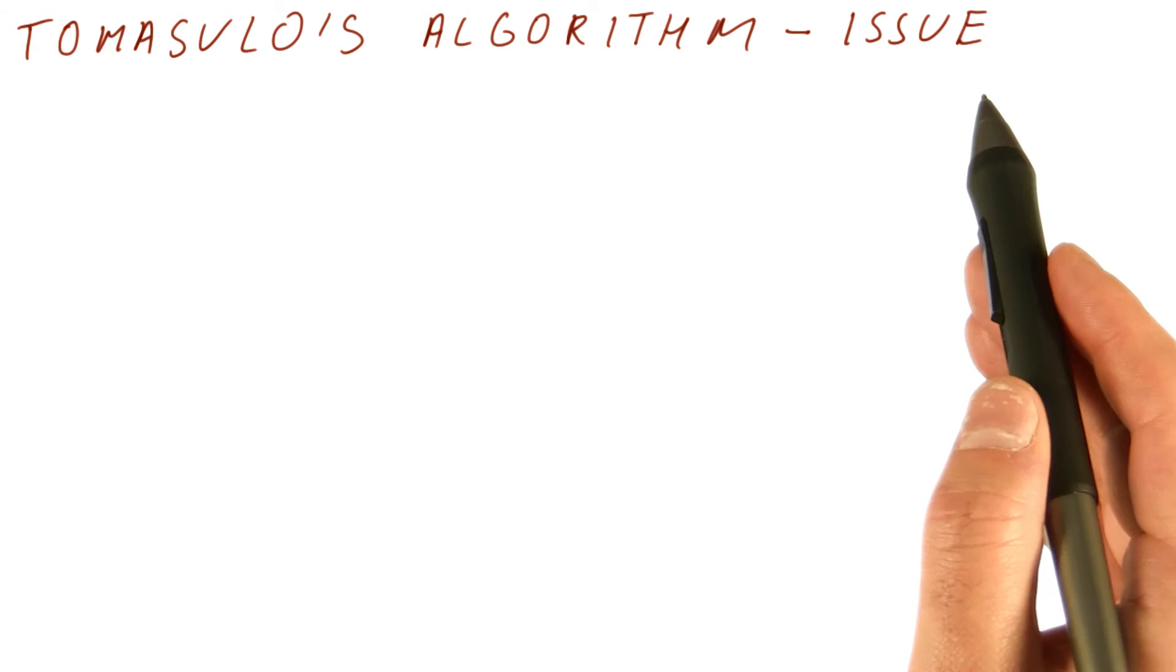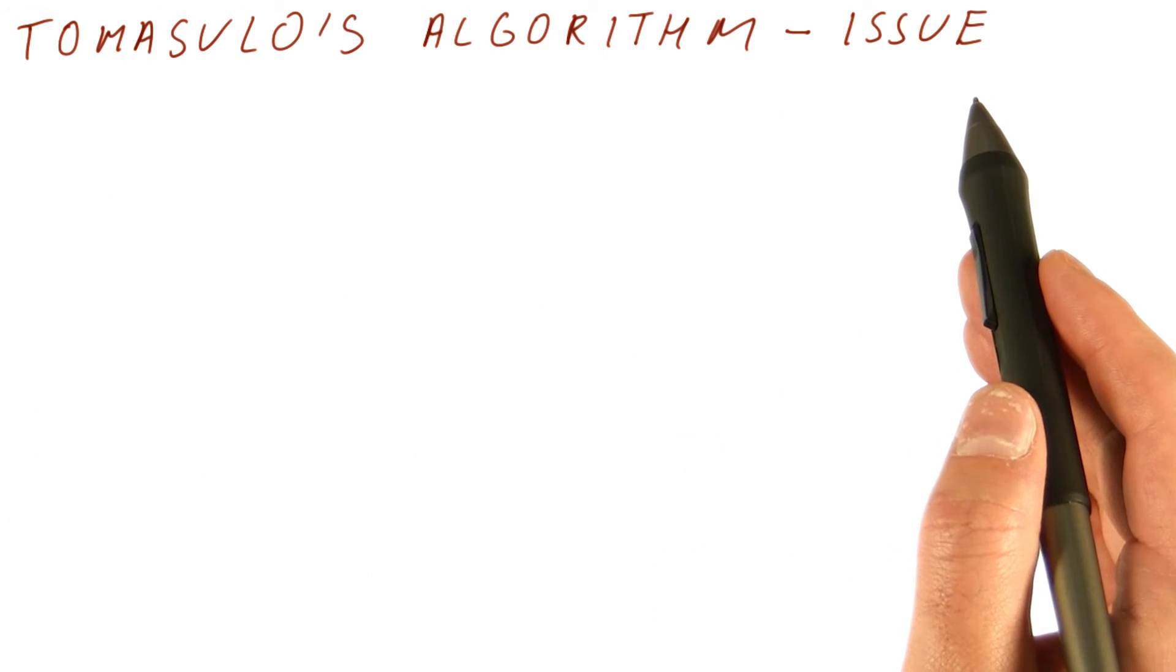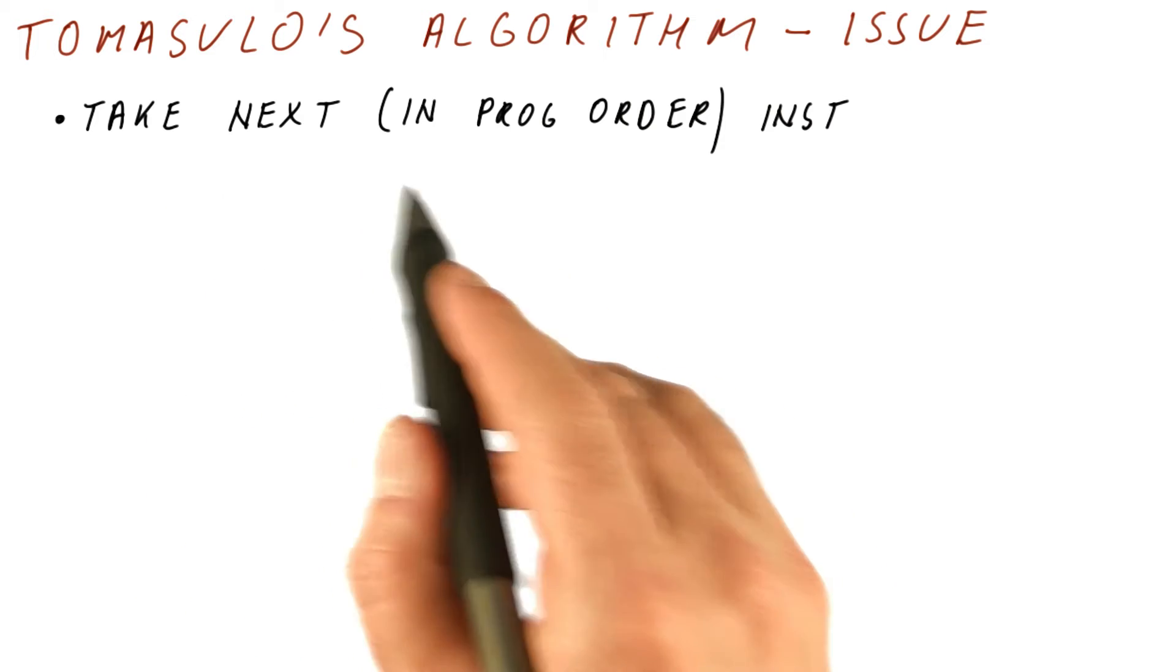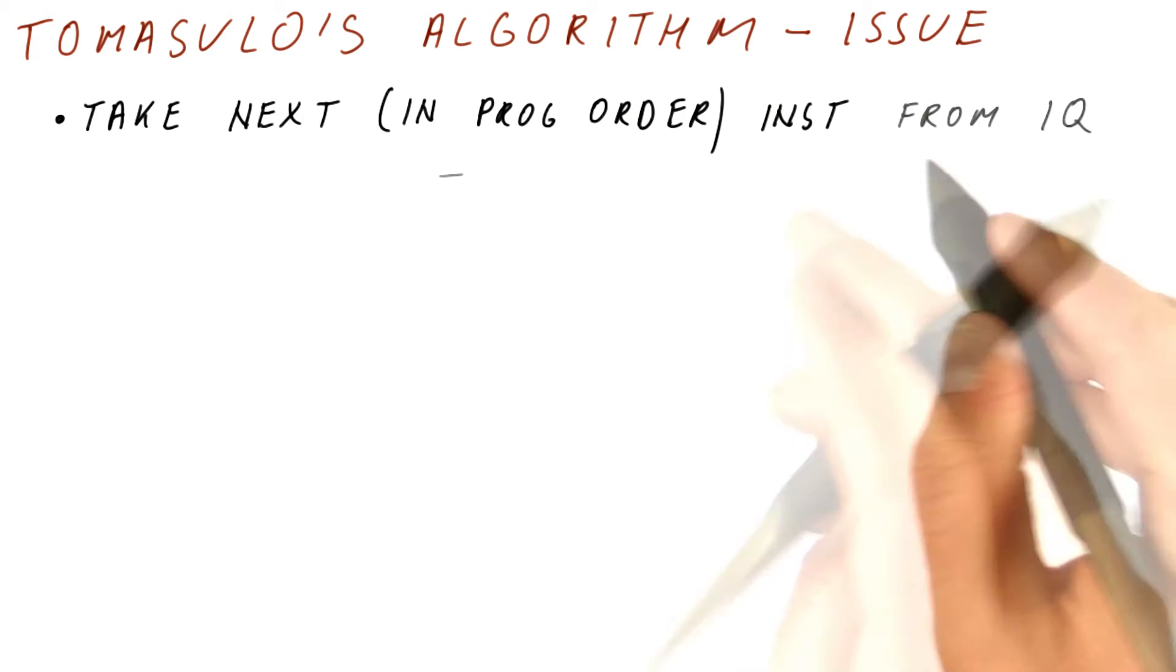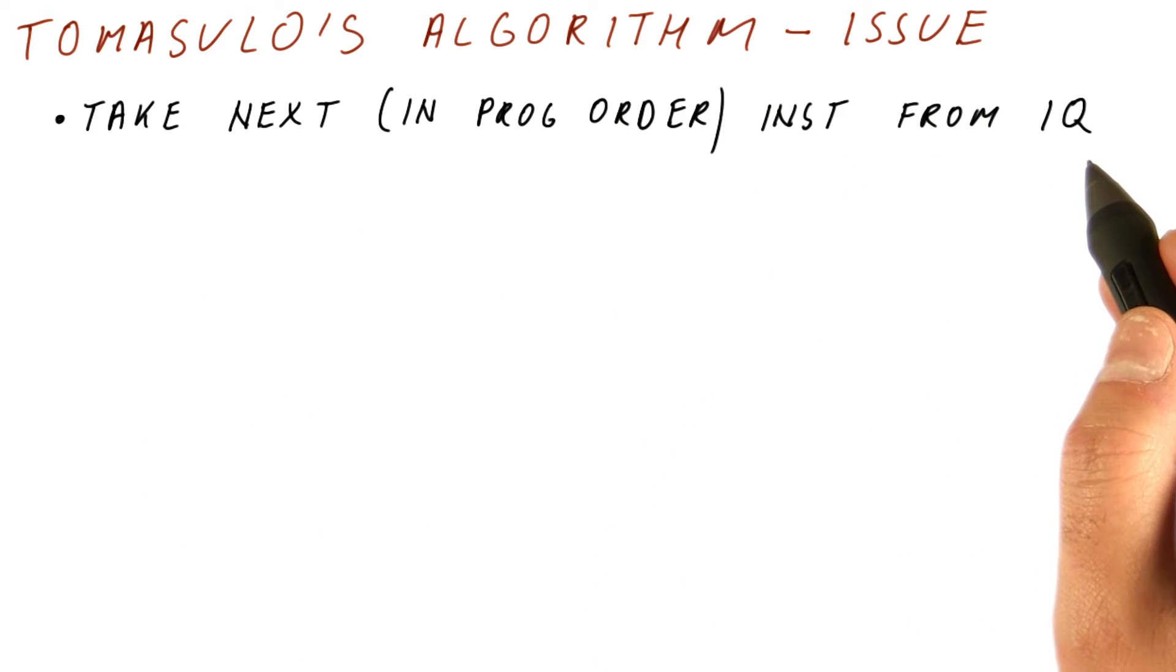The first step of Tomasulo's algorithm that we will consider is issue. So what happens during issue? We take the next instruction in program order from the instruction queue. This has to be done in program order for register renaming to work correctly.